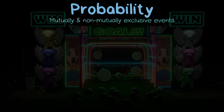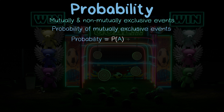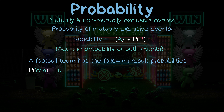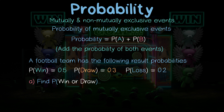To calculate the probability of mutually exclusive events, you simply add their probabilities together. Let's consider the football example. Your football team has the probabilities of a win at 0.5, drawing at 0.3, and a loss at 0.2. What are the chances your team will win or draw?